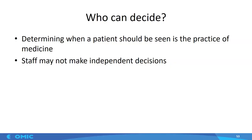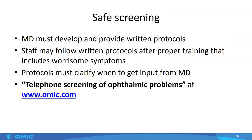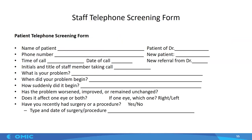What did we learn from this? One of the most serious allegations is the unlicensed practice of medicine. Determining when a patient should be seen is the practice of medicine — staff may not make independent decisions. They can use written protocols to make these decisions, but those protocols must include conditions that should be reported right away to the physician. We have sample protocols on our website that include questions to ask. Using this document, staff can circle answers, fill it out quickly, and then scan it into the medical record.